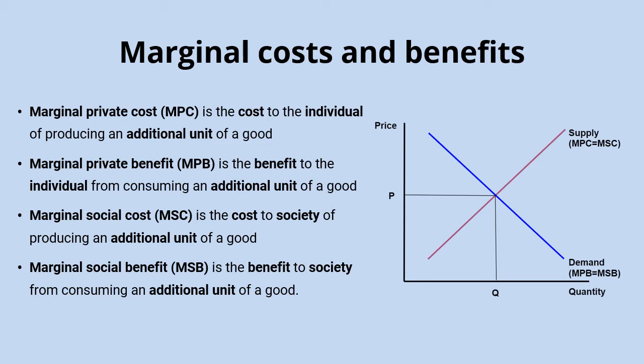The problem comes, and market failure occurs, when there are these externalities — these external costs or benefits that are imposed on third parties outside the usual workings of the market mechanism. In that case, it would cause a divergence of social costs from private costs, or a divergence of social benefits from private benefits. These are the cases of the different externalities and different market failures that we're going to look at now.